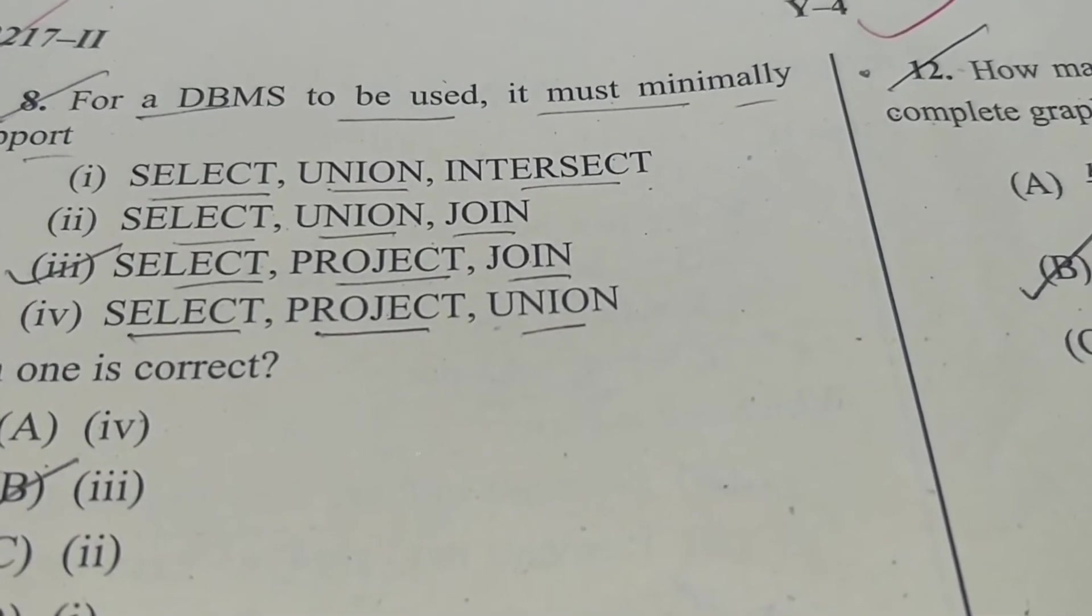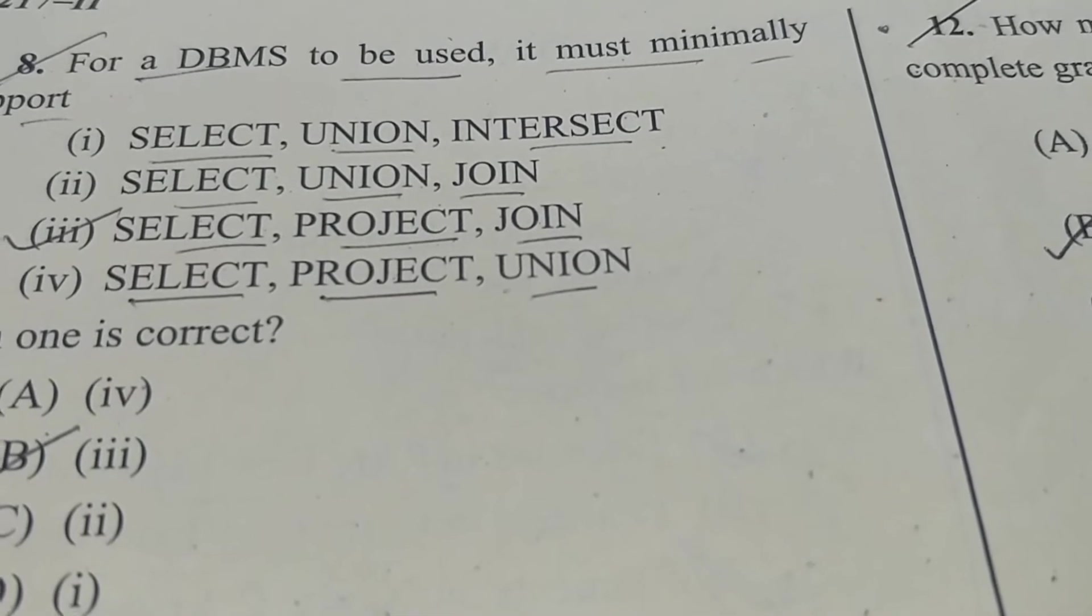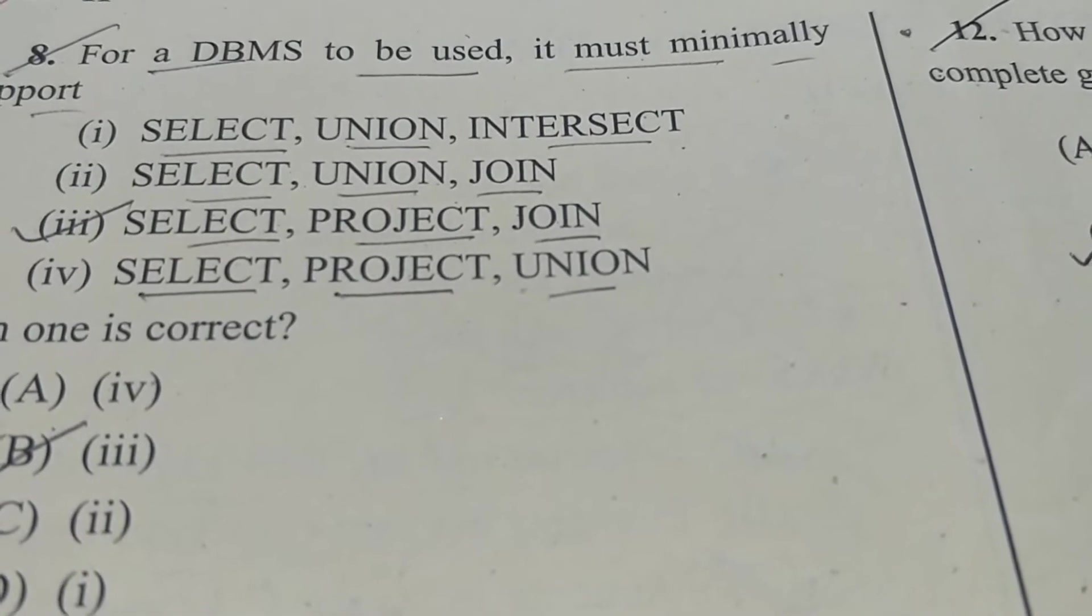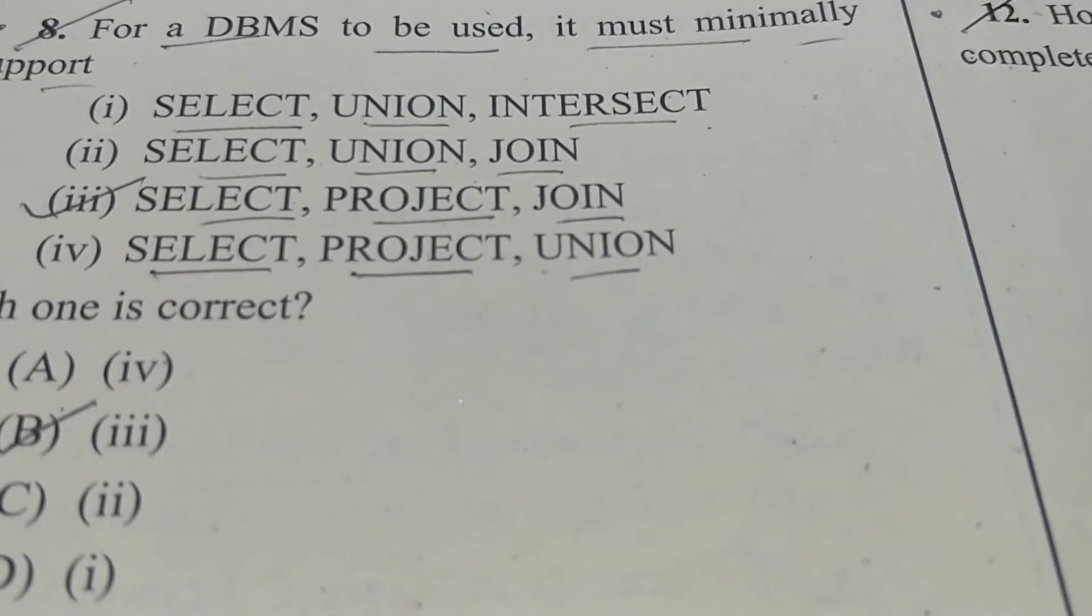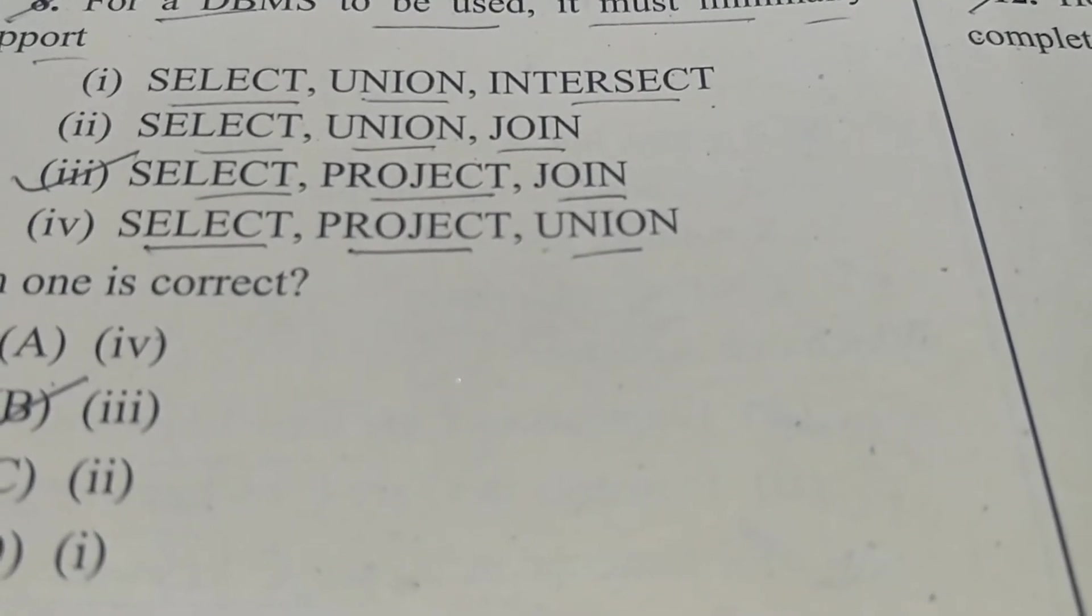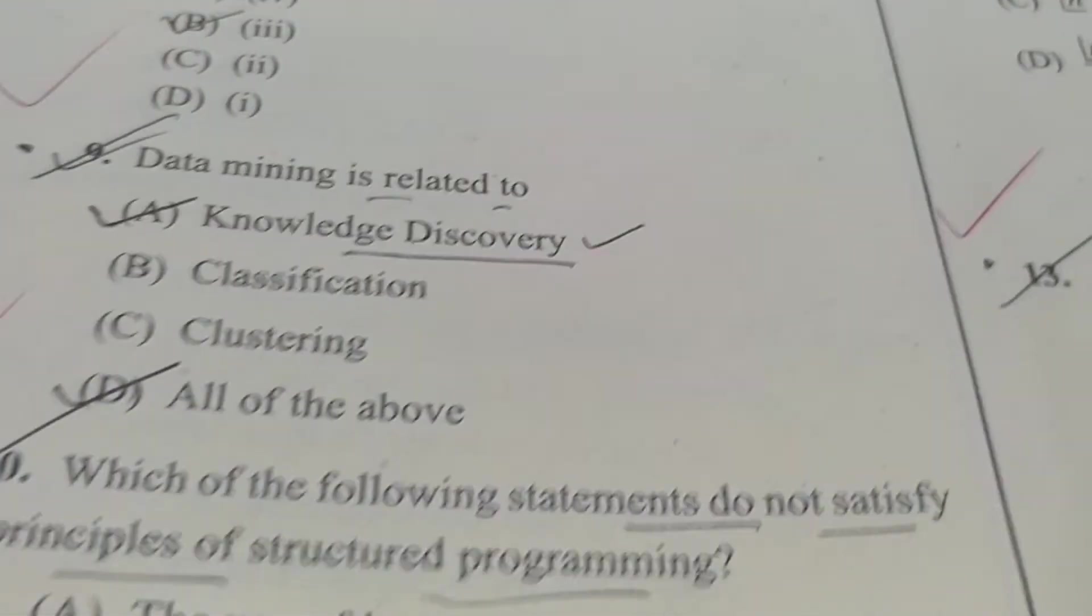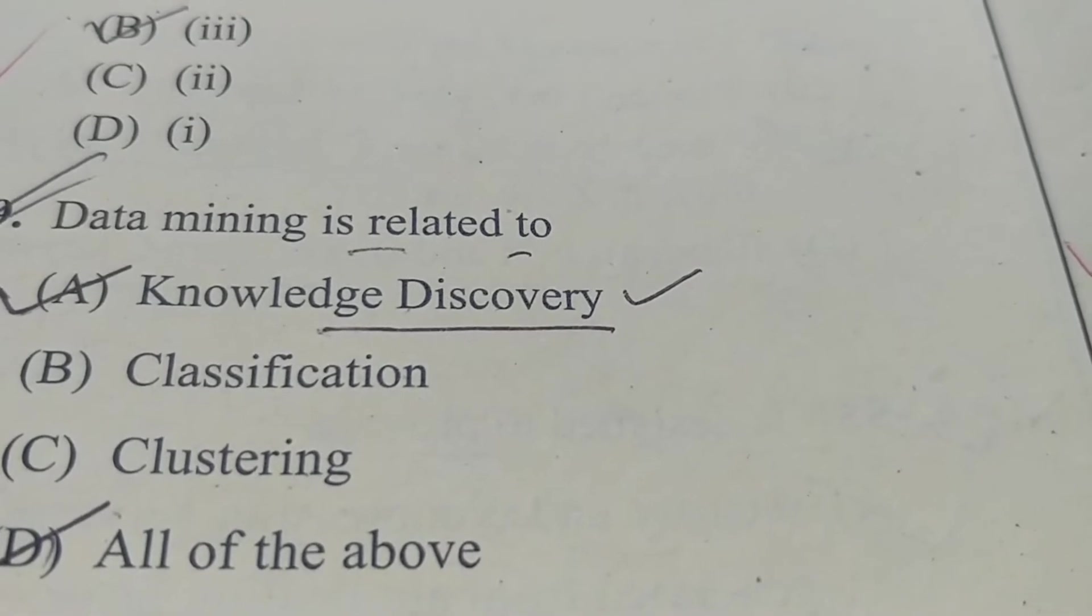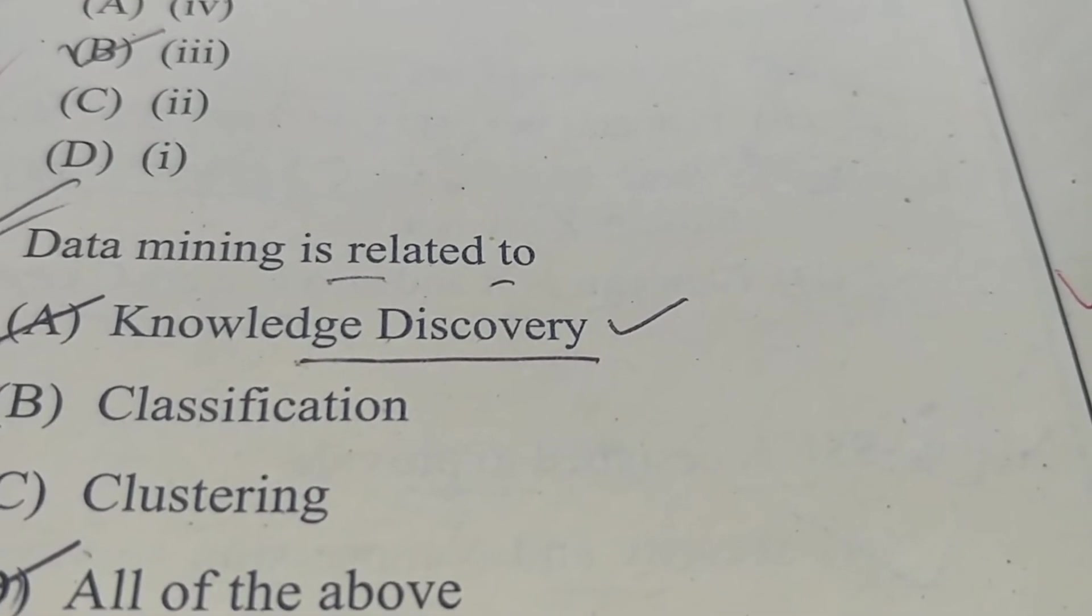Now the next question is: for a DBMS to be used, it must minimally support - so that is the minimum operation performed in DBMS. Number one is select, union, intersection - intersection is not required always. So option 2: select, union, join. Select, project, join. So option C is correct: select, project, and join. So B is the correct answer. Now the next question is: data mining is related to knowledge discovery - it is correct. Classification - it is correct. Clustering also uses data mining. So all of the above. Option D is the correct answer of question number 9.